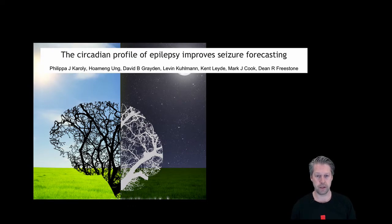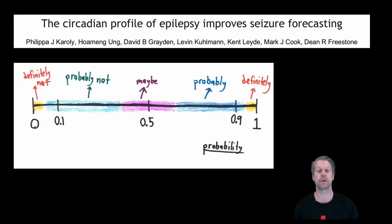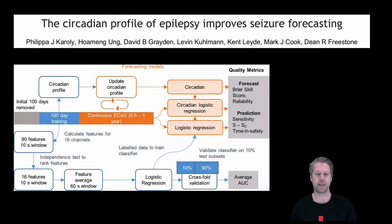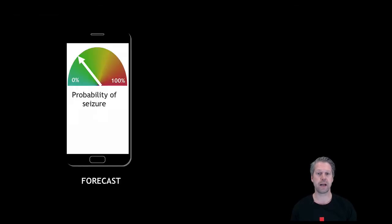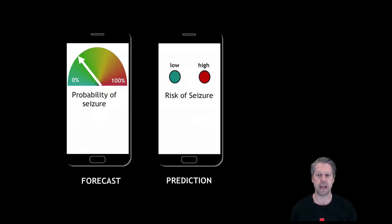Our major contribution is the formulation of a probabilistic framework for forecasting seizures. Our probabilistic framework tackles the problem of seizure prediction in a fundamentally new way that is different from traditional seizure prediction. In forecasting, patients are provided with information about the current seizure likelihood rather than a categorical statement about whether or not they will have a seizure.